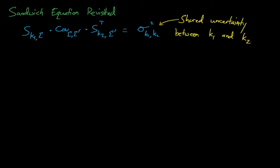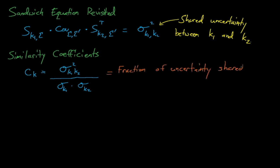If we take the shared uncertainty divided by the standard deviations for k1 and k2, then we can transform the shared uncertainty into the equivalent of a Pearson's correlation coefficient, which now describes the fraction of the nuclear data-induced uncertainty that is shared between k1 and k2.